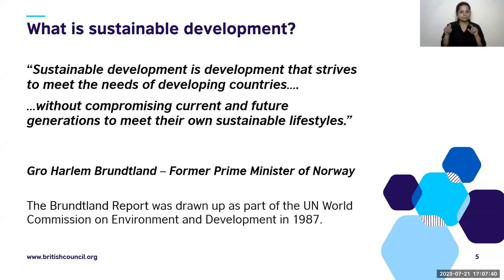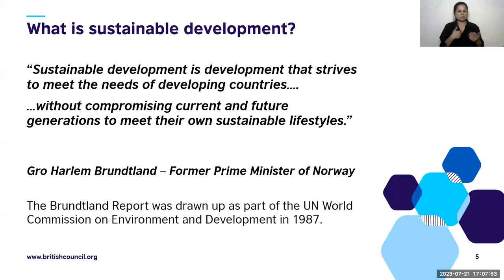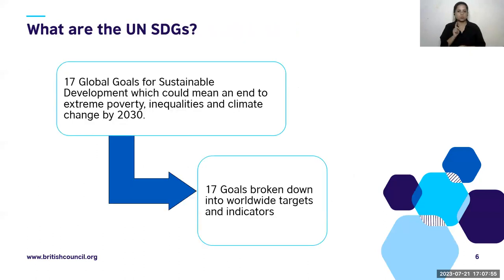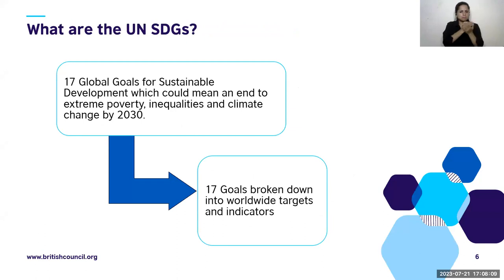On the slide you can see the definition of sustainable development. In a nutshell, it means ensuring the health and safety of future generations without over-exploiting current resources. There are 17 global goals for sustainable development which could mean an end to extreme poverty, inequalities, and climate change by 2030. These 17 goals are further broken down into worldwide targets and indicators.